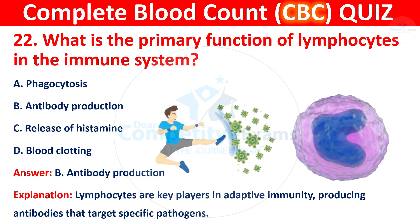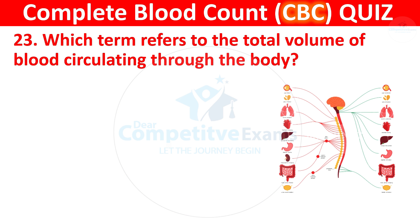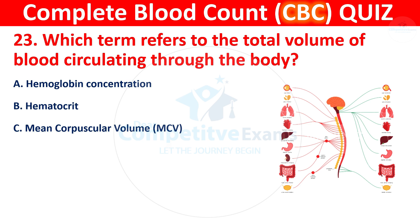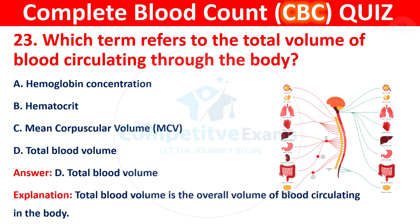Question 23: Which term refers to the total volume of blood circulating through the body? Your options are hemoglobin concentration, hematocrit, mean corpuscular volume, or total blood volume. The correct answer is D, total blood volume. Total blood volume is the overall volume of blood circulating in the body.